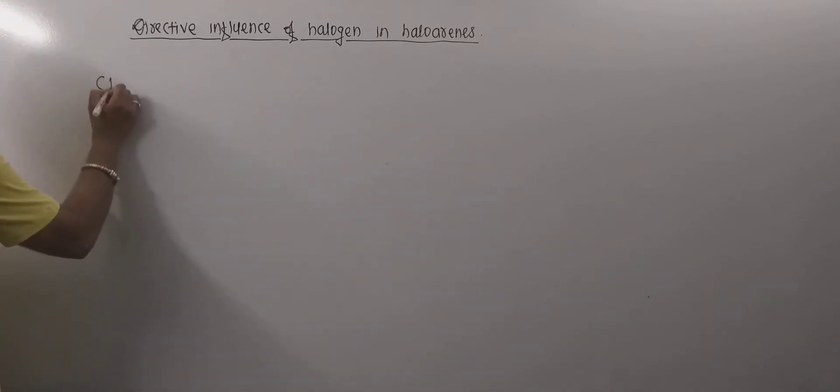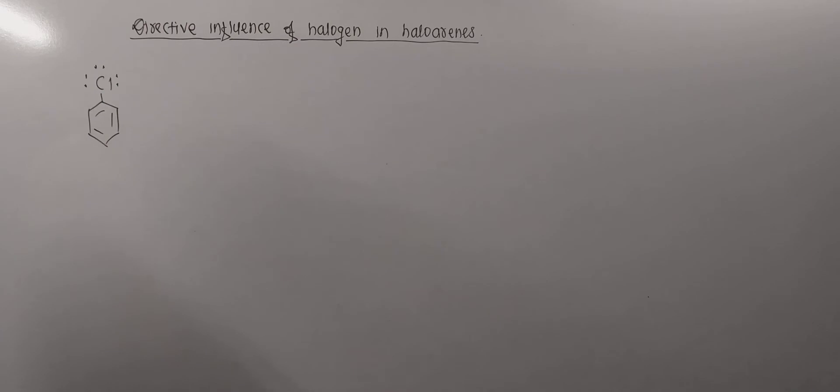Now consider chlorobenzene. Chlorobenzene can be drawn in this way. This is the chlorobenzene and these are the electrons in the valence shell of chlorine.